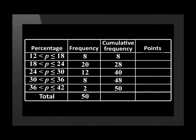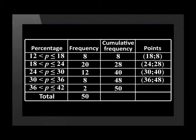Now using this table, we are going to construct a cumulative frequency graph. The class intervals will always be on the x-axis and the cumulative frequency on the y-axis. The coordinates of the points plotted use the upper boundary of the interval for x and the cumulative frequency value for y. So the points are (18, 8), (24, 28), (30, 40), (36, 48), and (42, 50).